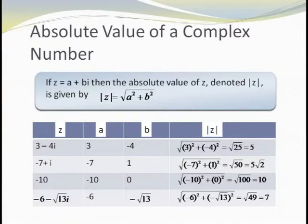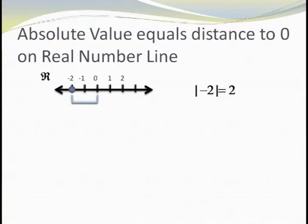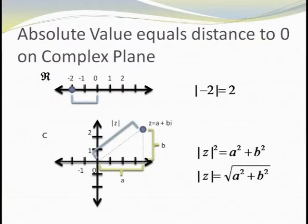Notice this is the same result as for real numbers. If z equals negative 6 minus the square root of 13 times i, then a equals negative 6 and b equals the square root of 13, so the absolute value of z is the square root of 36 plus 13, which equals the square root of 49 or just 7. Geometrically, the absolute value is the distance from the complex number back to the origin. If we have a complex number a plus bi, we can make a right triangle where the base has length a and the height is b. Using the Pythagorean theorem, the absolute value of z squared equals a squared plus b squared, giving us the absolute value of z equals the square root of a squared plus b squared.